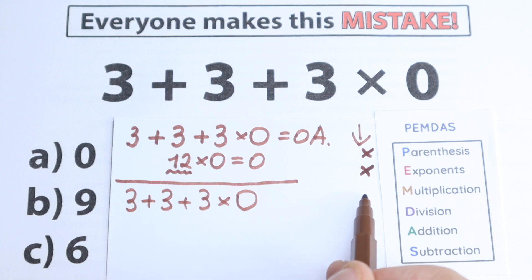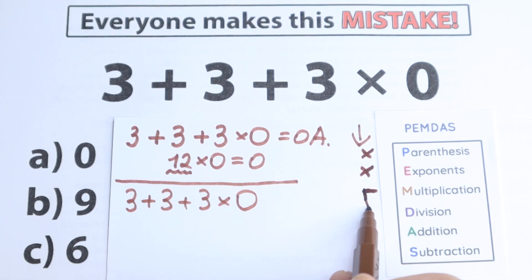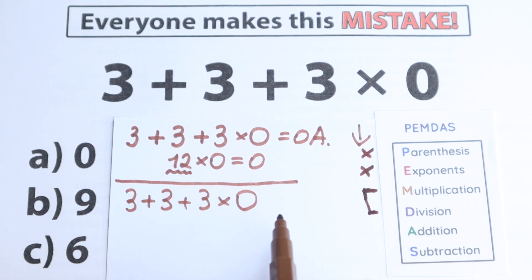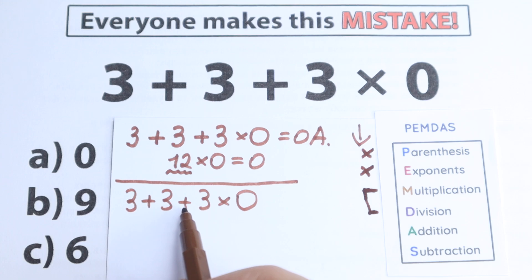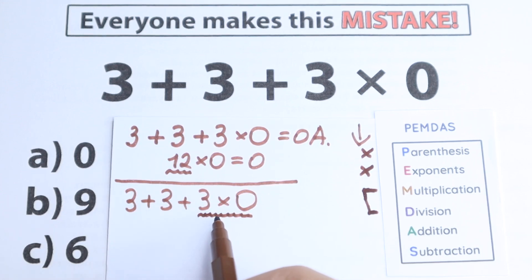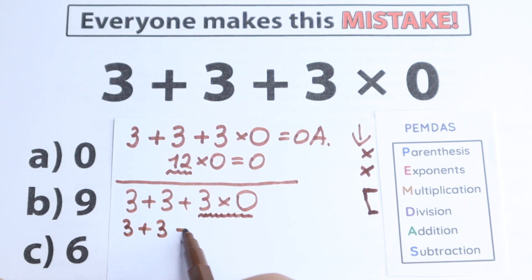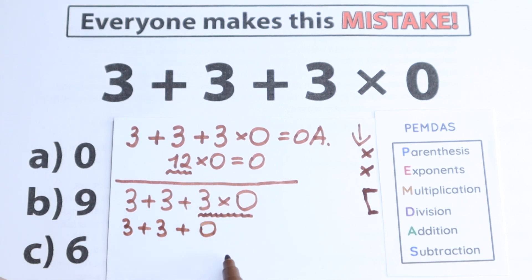Let's go to the next step. According to PEMDAS, the next step is Multiplication and Division — and a lot of students make the common mistake of looking only for multiplication, but division belongs to the same group. Let's find the multiplication and division signs in our question. We have addition, addition, and multiplication — but this multiplication only connects these two numbers. We multiply only 3 times 0, and that equals 0. So we now have 3 plus 3 plus 0.